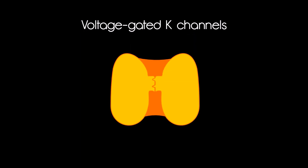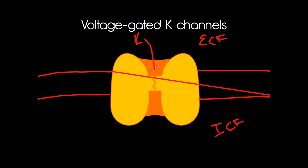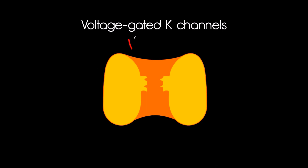We also have voltage-gated potassium channels. These allow potassium to pass through when open, but unlike sodium channels, they have no inactivation gate — they are simply either open or closed. These are also voltage-gated, opening in response to a particular voltage. Now let's look at what happens during an action potential. Inside the pink cell interior is intracellular fluid; outside is extracellular fluid. Blue channels are sodium channels; orange are potassium channels.